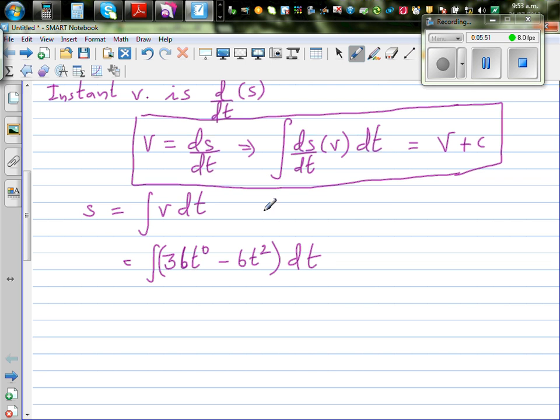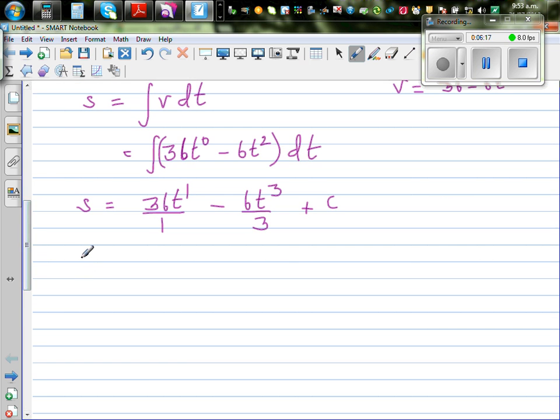So integrating with respect to time, the same rule. Add the power by 1. So 36 T to the power 1 over 1 minus 6 T cubed over 3 plus C. So your function, your distance is S equals 36 T minus 2 T cubed plus C.